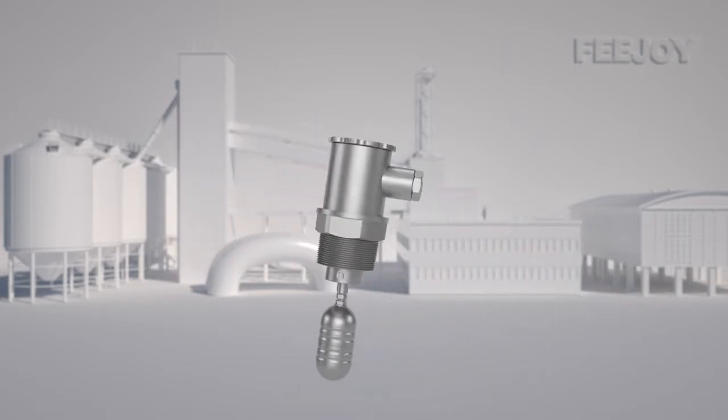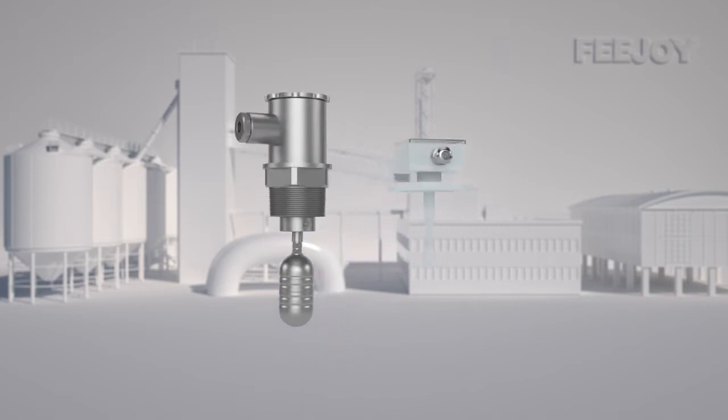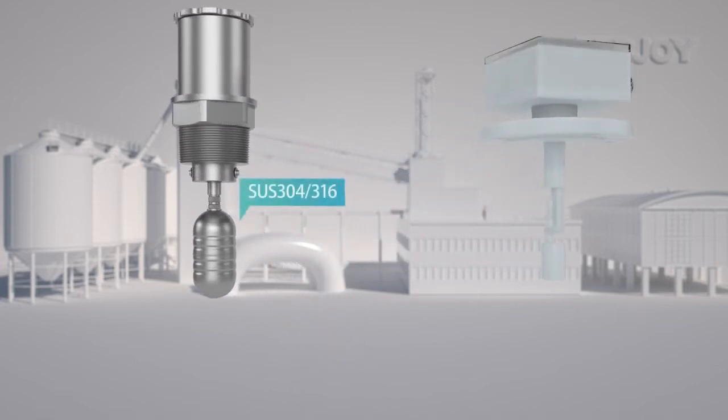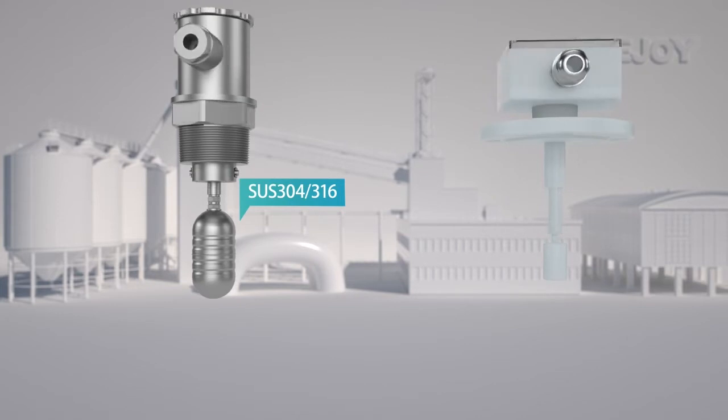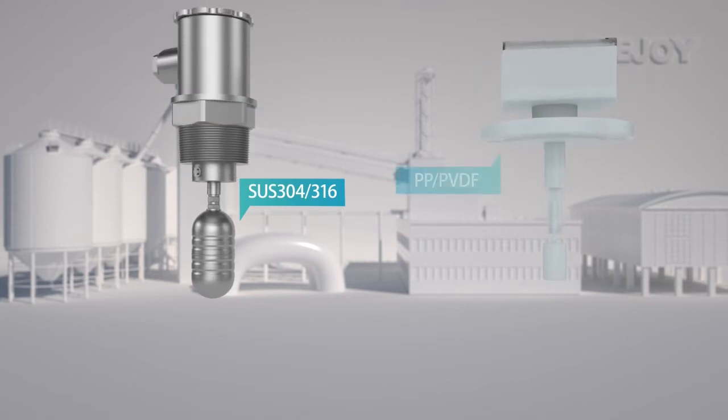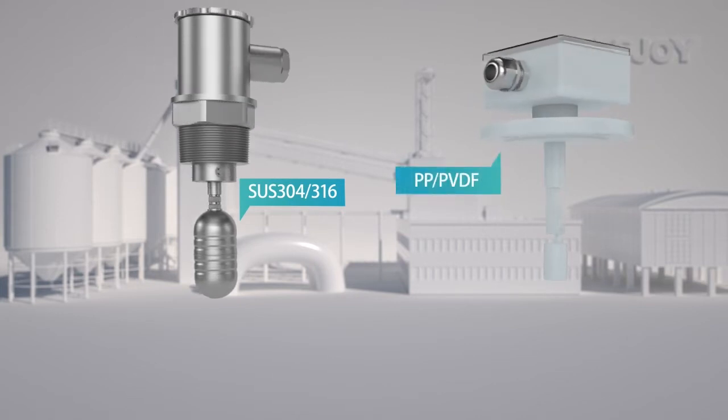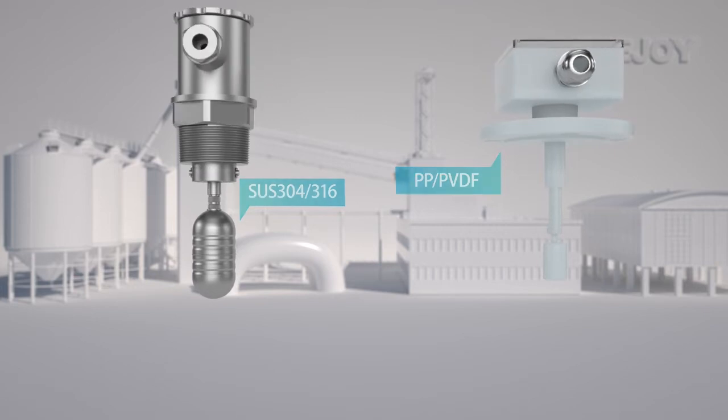In order to adapt to different working conditions, the side-mounted float level switch can use different materials, for example, the explosion-proof type adopts SUS-304, 316 metal, PVDF plastic material, etc.